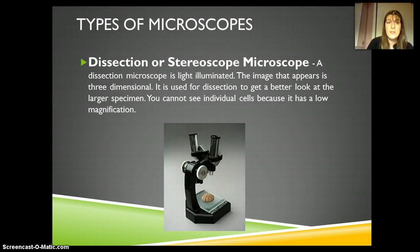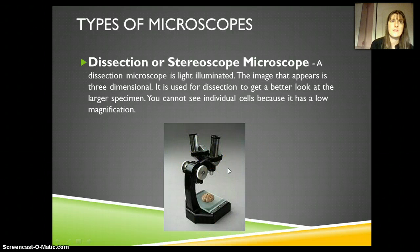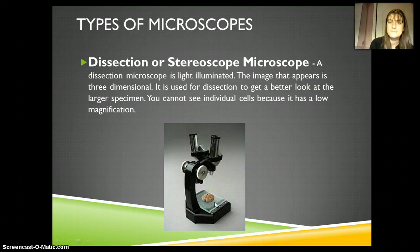We'll also use dissection or stereoscope microscopes. They're also light microscopes, but this time they have two eyepieces versus just one. They generally have low magnification, but they allow you to see things in 3D, which is why they're called dissection scopes — because often you use them to help with dissection.